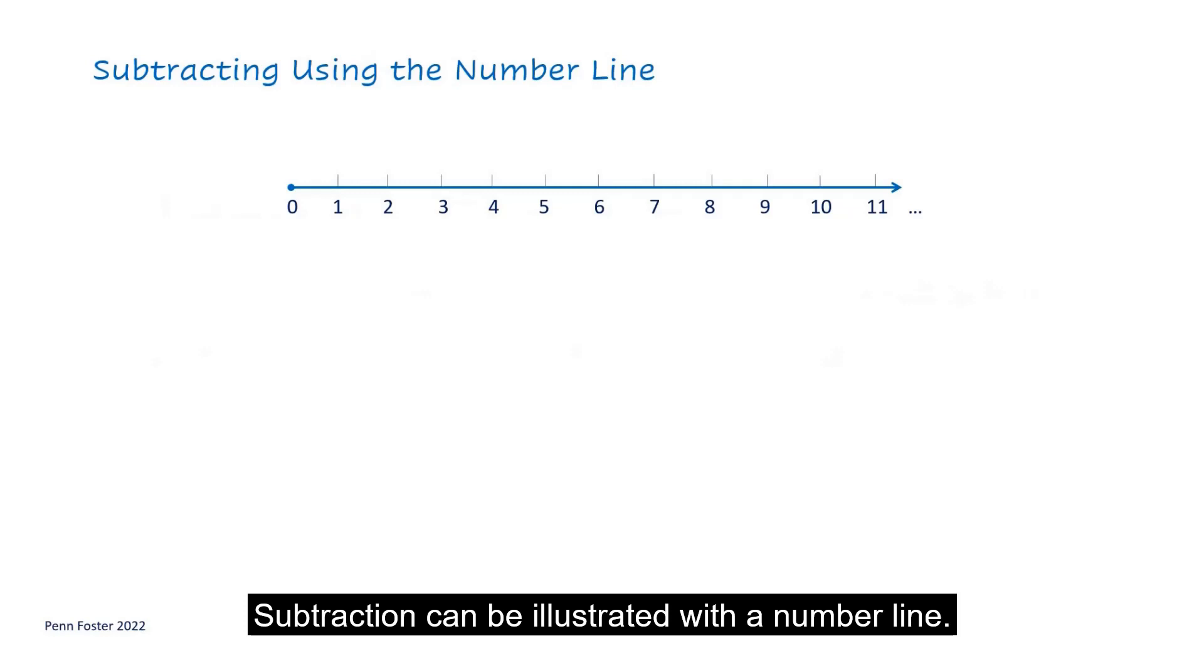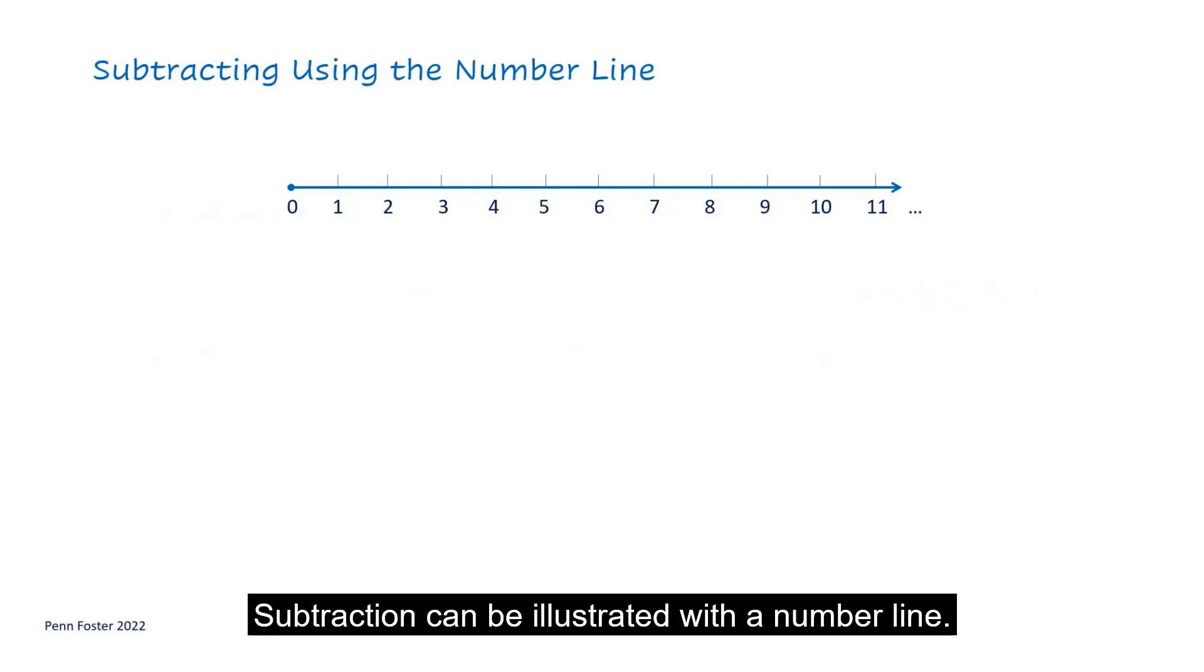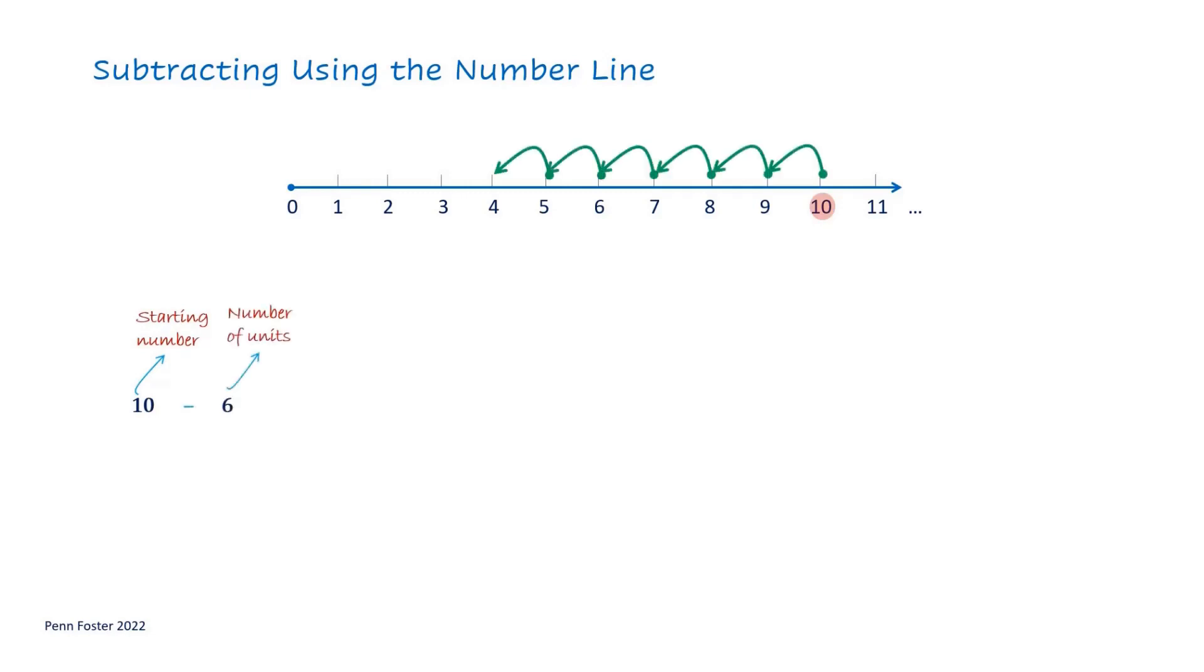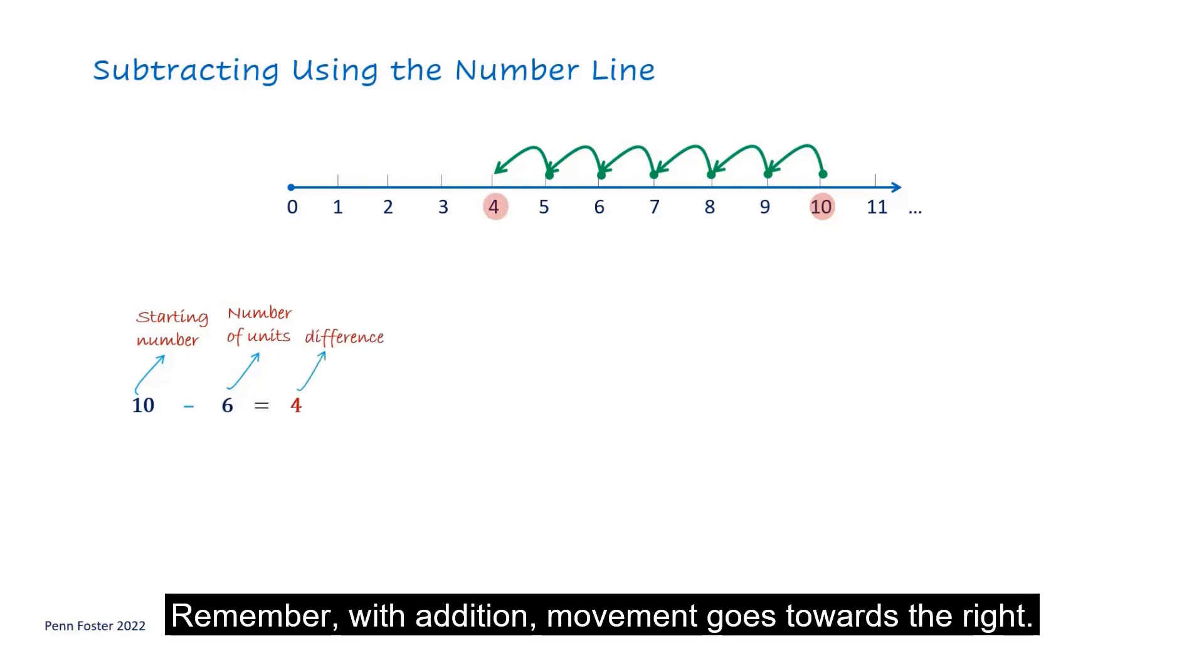Subtraction can be illustrated with a number line. For 10 minus 6, start at 10 and move six spots to the left. The remaining spot is 4. Remember, with addition, movement goes toward the right.